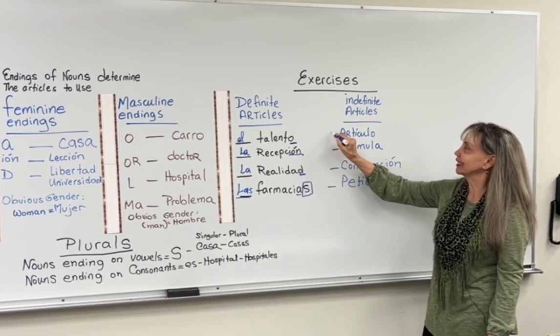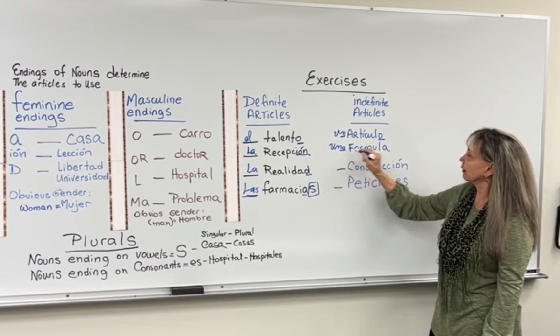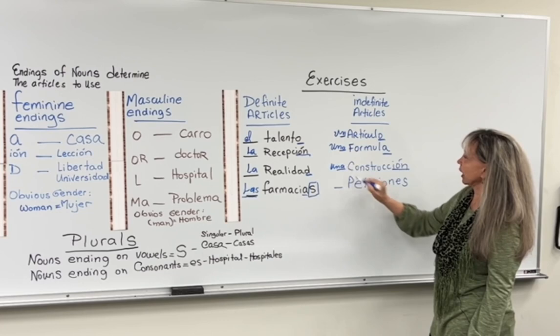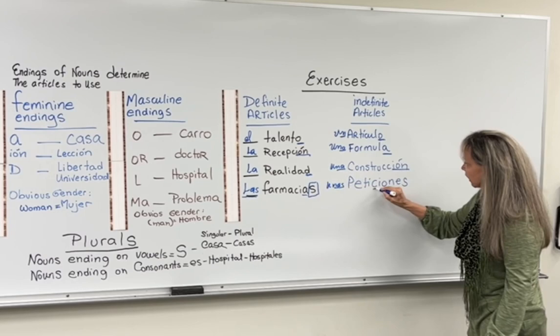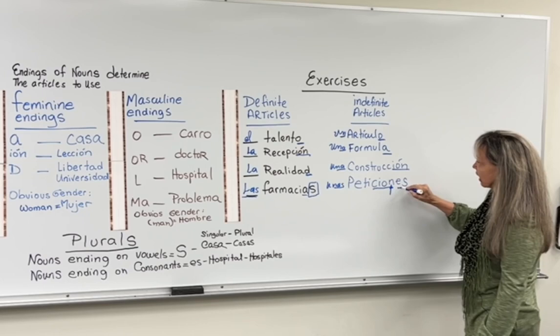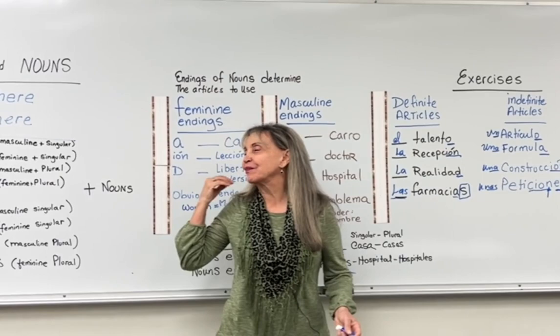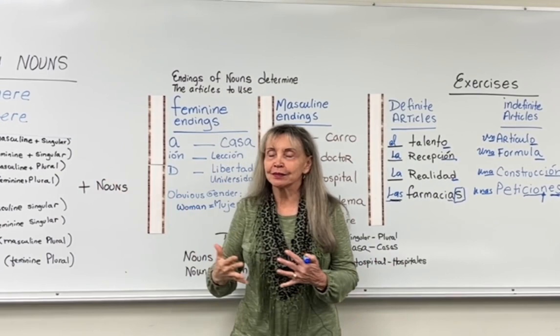Let's move to the indefinite article exercises. Un artículo — un. Una fórmula — una. Una construcción — una. And for the last one: unas. The word ending in -sión here is a consonant, so I am adding -es to make it plural. And with this, I am closing this video. It was a pleasure being able to explain this lesson to you through this method. Stay tuned. Adiós — bye bye bye!